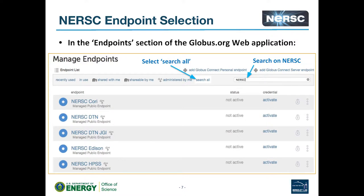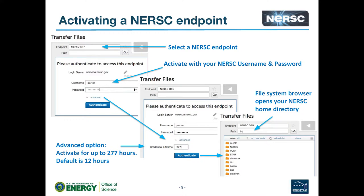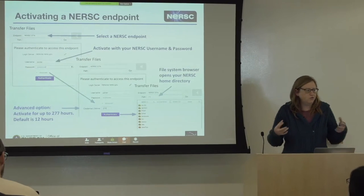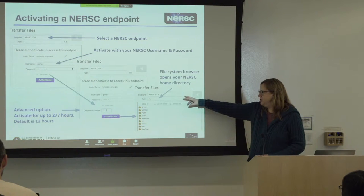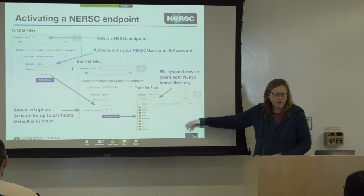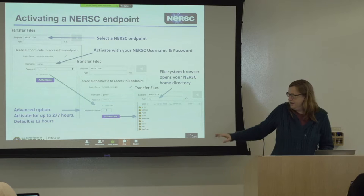If you go to the Endpoints tab and search all and type in NERSC, you'll see all the options come up. It'll tell you whether you've activated them. You put in the name of the endpoint — NERSC DTN — and then it gives you a prompt to activate with your NERSC username and password. The default activation time is 12 hours; you can request up to 277. Once you activate, it shows you everything in your home directory. You can navigate by clicking or by typing a path — for example, slash project, then your project name.